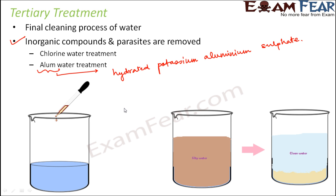Not only chlorine and alum, there are a couple of other chemicals which can also be used for the final cleaning process of water. One such example is ozone, and another example is bleaching powder. All these are chemicals which have the ability to clean water or to get the water rid of microorganisms or inorganic compounds.